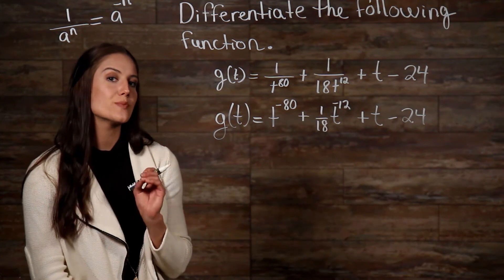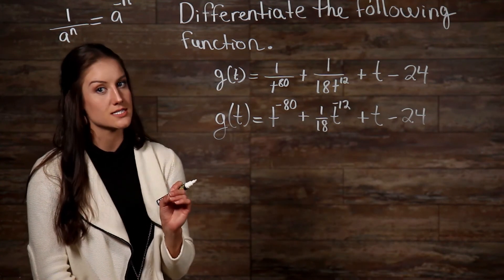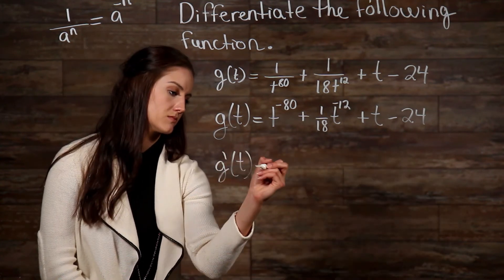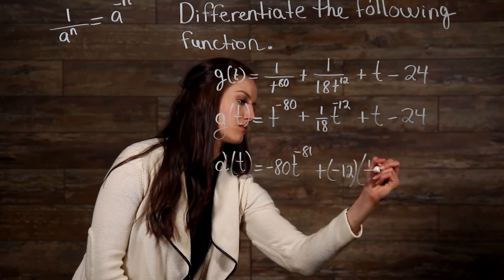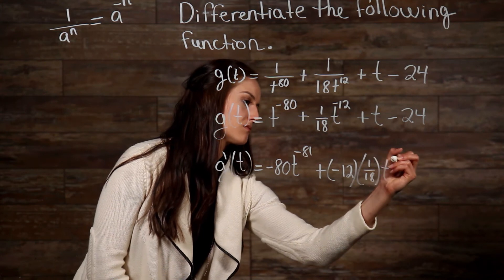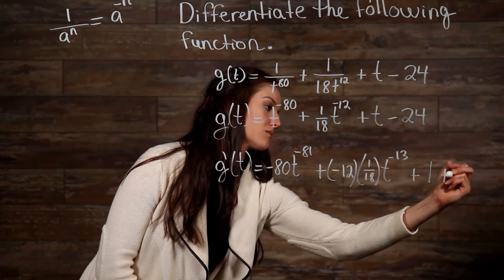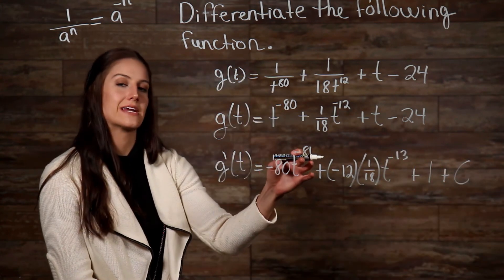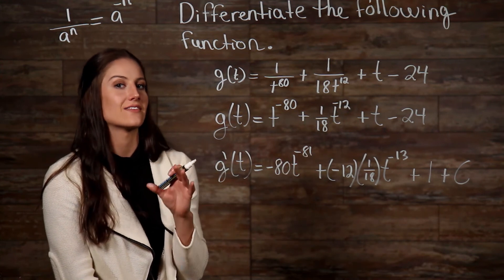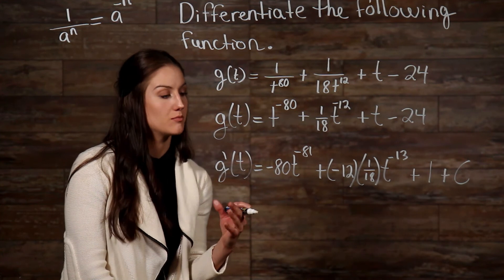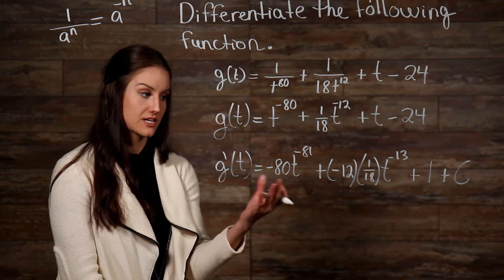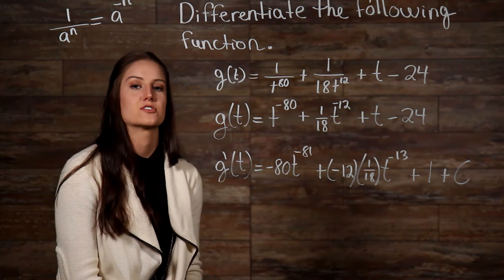Now, we can use our power rule and formula for a constant. The reason our exponent here went from negative 80 to negative 81 is because we are subtracting negative 1 from negative 80, which gives us negative 81. And same thing here for negative 13.